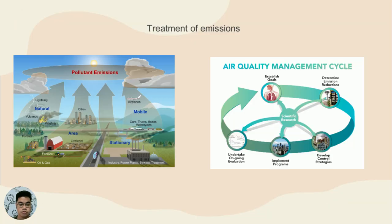Air pollutants may be dispersed by air, water, soil, living organisms, and food. The pathways of dispersion vary greatly depending upon both the emission source and the pollutant concerned. Rates and patterns of dispersion also depend to a large extent upon environmental conditions.